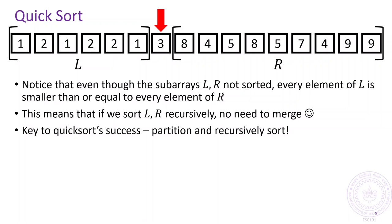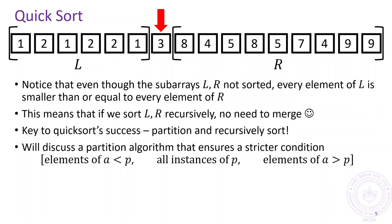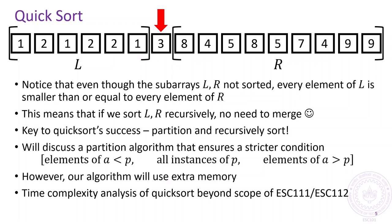We will now discuss an algorithm that partitions while taking into account the possibility that the pivot element might repeat in the array. However, this algorithm will not be an in-place algorithm, that is, it will use order n extra memory. As we commented, the time complexity analysis of quicksort is beyond the scope of this course.